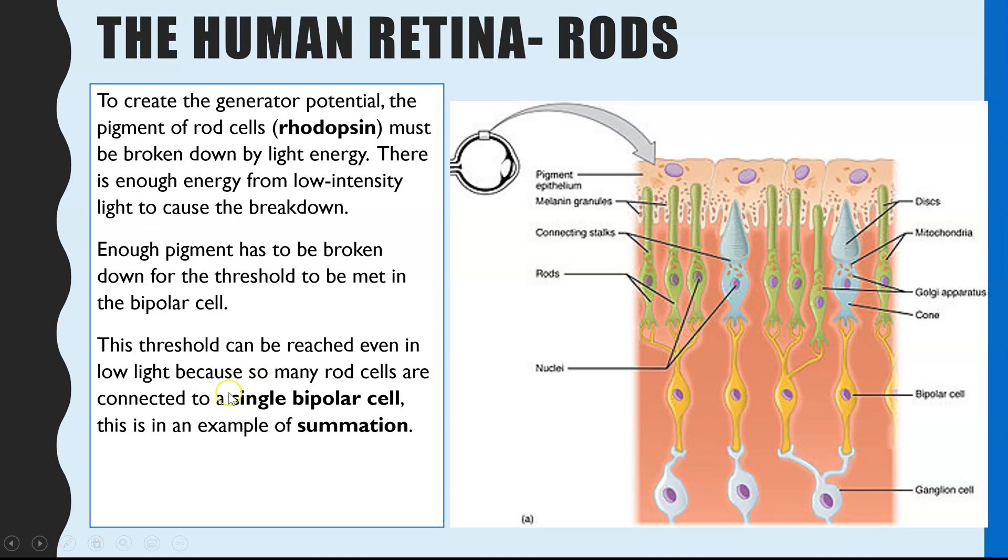And this means that you actually have multiple rod cells connecting to one bipolar cell. And the advantage of that is this concept called summation, and in particular, it's spatial summation. So if we have a look over here, we have three rod cells connecting to one bipolar cell. And each of these rod cells in that low light intensity, the rhodopsin will be broken down. And collectively, all of that broken down pigment will then hopefully result in a big enough stimulus to trigger an action potential. And that's what spatial summation is.